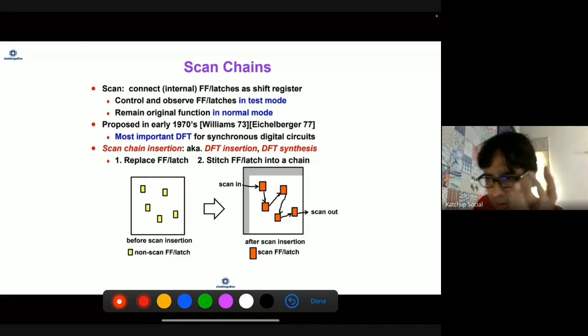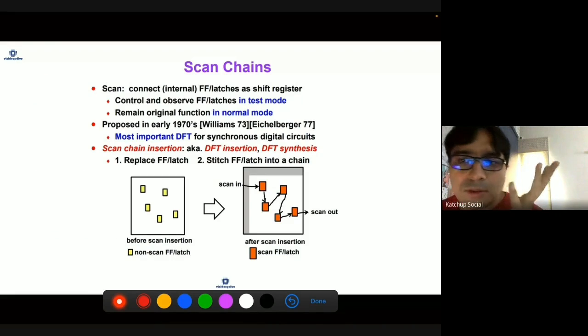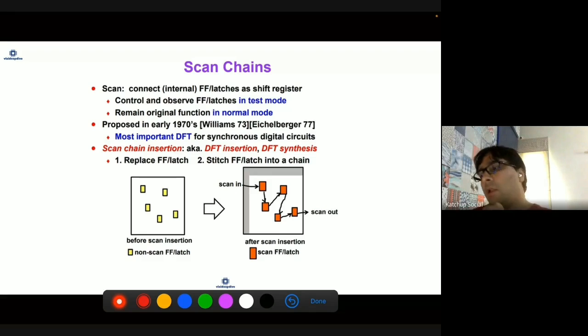One of the most important methods how you do this is by doing scan chains. What you do is, you will add additional circuitry by which you can make nodes controllable and observable. One of the ways by which it is done is by doing scan chains. What is a scan chain? In a scan chain, you connect all your flops in the design so that there is a way for them to connect to primary input and primary output.